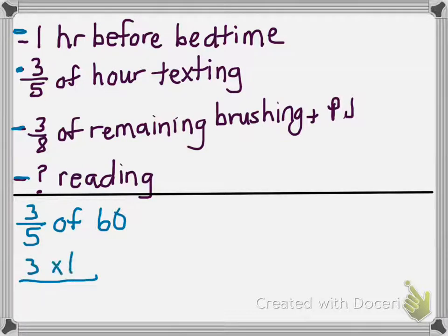Three times sixty over five. Now ask yourself, can you cross-simplify? Is there anything on the bottom floor, the denominator, and the top floor, the numerator—is there any factors that they have in common? Well, I know that five goes into both five and sixty. Five goes into five one time. Five goes into sixty twelve times.